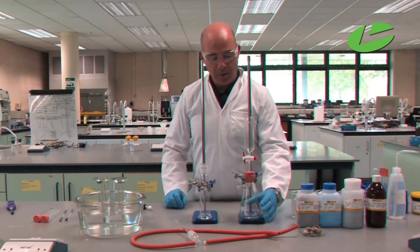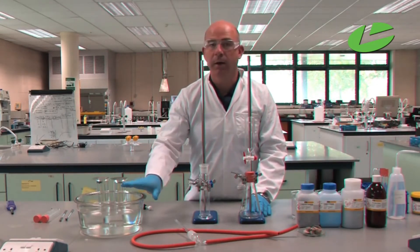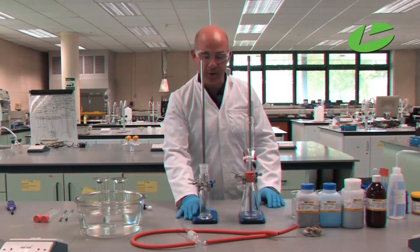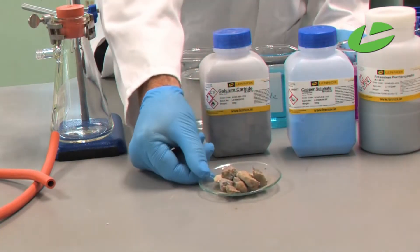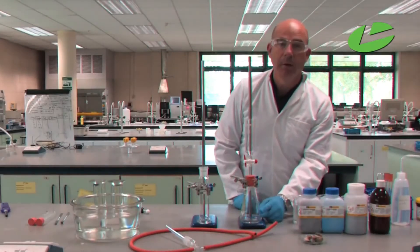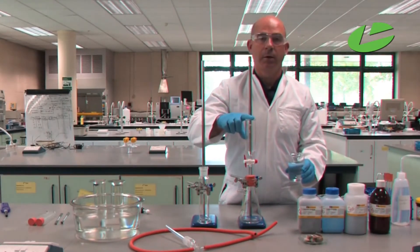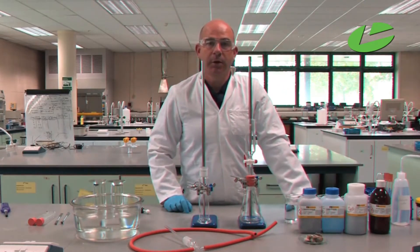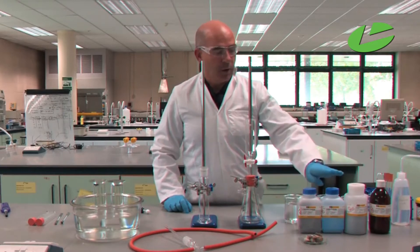To prepare ethyne gas, you need a Buchner flask with a dropping funnel and a threshold head into a collecting jar. The chemicals we're using are calcium carbide, which goes into the Buchner flask, and deionized water in the dropping funnel. When preparing ethyne gas, there are impurities, so we use acidified copper sulfate to remove them.